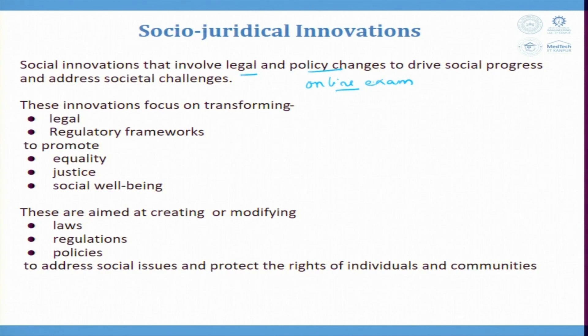So, this policy change — offline exam becoming online — was driven largely because the dependency on paper is reduced. Once paper dependency is reduced, errors are reduced, and deforestation is reduced. Because of reduced deforestation, you are able to have climatic control, get clean unpolluted air, and soil erosion is avoided. So you see, all these things are an impact just by converting an offline exam to an online one — you get so much benefit to drive social progress and address societal challenges.